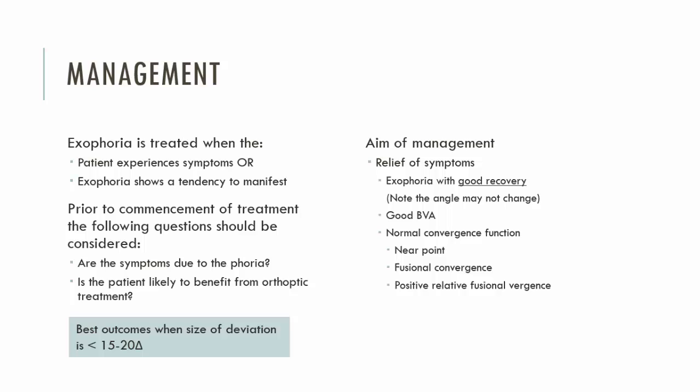One of the things you will need to determine is that the presenting complaint or symptoms the patient is complaining of is directly associated with the deviation. Generally what you will find is that there is a decompensating exophoria leading to the symptoms. An exophoria with rapid recovery, for example, does not lead to symptoms. You need to be convinced that the patient's symptoms are related to a decompensating exophoria before developing a management plan.